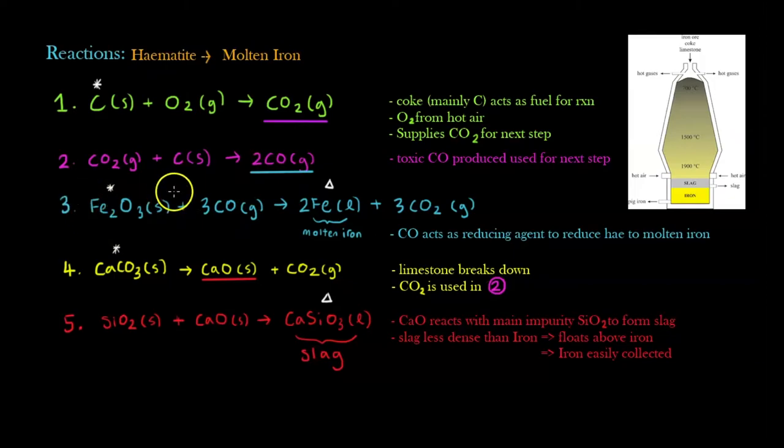So I carry on to the next step here. Now I'm reacting with my hematite. Hematite with the product from the second reaction, which is CO, carbon monoxide, gives me molten iron. Molten iron with 3CO2. And you can see that this CO that's produced in the second reaction is used as a reducing agent. It reduces this hematite to molten iron, by taking away its oxygen, basically. And you can see that this CO2 is actually being pumped back into the second reaction so that it can continue again.